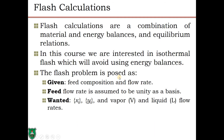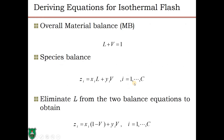We are going to deal only with the isothermal flash case in this course. The problem is posed as follows: given the feed composition and flow rates, the feed flow rate is assumed to be unity as a basis. If your actual feed flow rate is, say, 1000 moles per hour and the vapor fraction is 0.6, then 600 moles per hour go to vapor and 400 moles per hour go to liquid. The unknowns are the mole fractions in the vapor and liquid phases at equilibrium, and the vapor and liquid fractions.